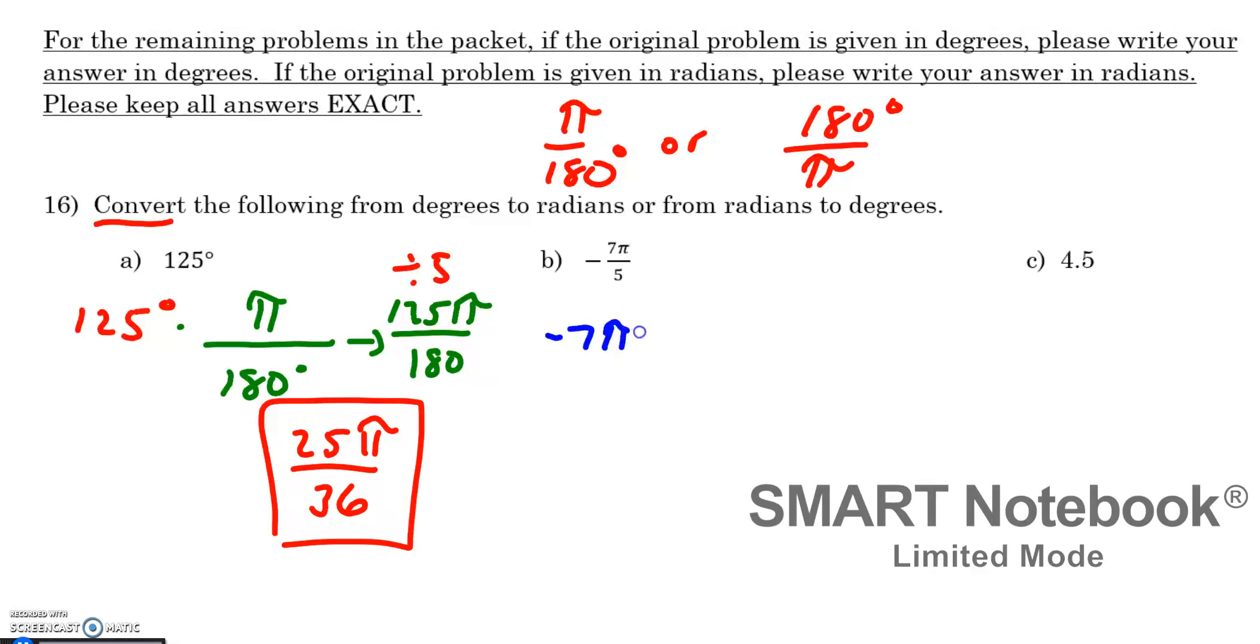Part B, if I'm given 7 pi over 5, there is no degree symbol, and there is a pi, which makes me think it is in radians. So if I would like to convert that to degrees, I know that I need to pick this one, because I want degrees left over, and I do not want the radians anymore. So if I multiply by 180 over pi, the pi's cross out, and I am left with, I can cross cancel here. 5 goes into 180 36 times, so I'm really left with just negative 7 times 36, which would be negative 252 degrees.